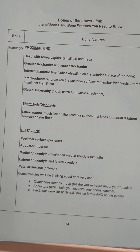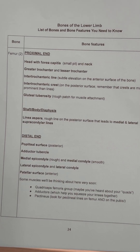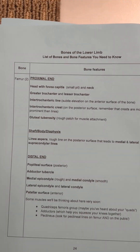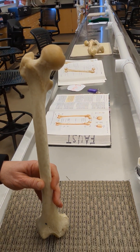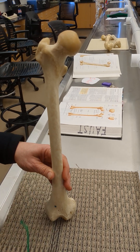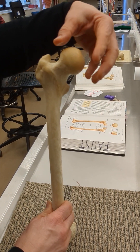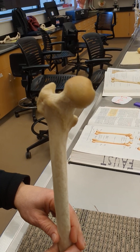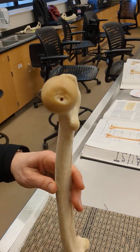This will be a video about the femur, on page 24 of your blue bone packet. We're going to start by looking at the proximal end of the femur. You can see that this is a right femur with the head of the femur located medially. There's also a fovea capitis in the head of the femur.